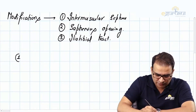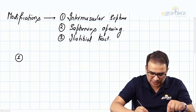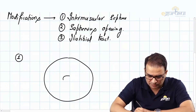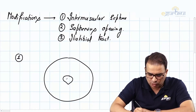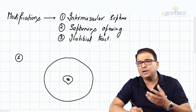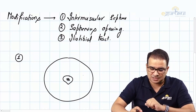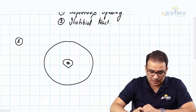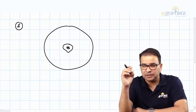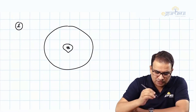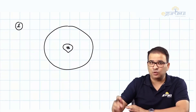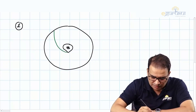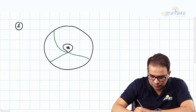When we say intermuscular septum — the first modification — imagine you are looking at a transverse section of a thigh. The section will go through the femur bone. The posterior border of the femur has a very prominent border called the linea aspera, discussed in detail in the osteology part. This linea aspera provides attachment to three intermuscular septa extending from the fascia lata.